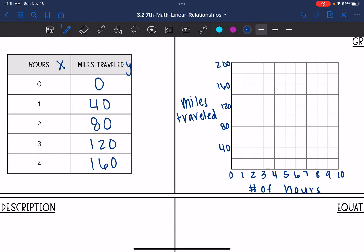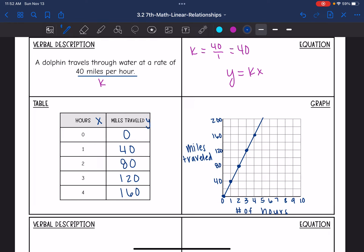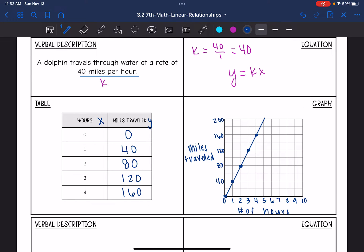Now I have my graph set up so I can plot these points. So it was 0, 0, and then after one hour, it had gone 40 miles. After two hours, it had gone 80 miles. Three hours, 120, four hours, 160. And then I am going to go ahead and connect these points with a line because the dolphin would be traveling in between these points as well. So there are all the different representations to show a dolphin traveling through water at a rate of 40 miles per hour.